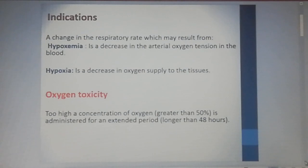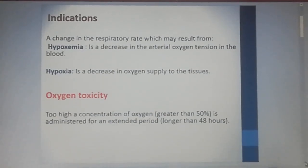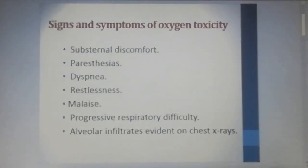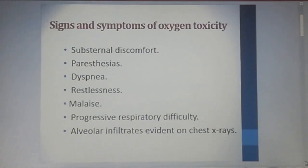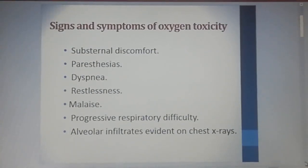Oxygen toxicity occurs when too high a concentration of oxygen — greater than 50% — is administered for an extended period longer than 48 hours. Signs and symptoms of oxygen toxicity include substernal discomfort, paresthesia, dyspnea, restlessness, malaise, progressive respiratory difficulty, and alveolar infiltration evident on chest X-ray.